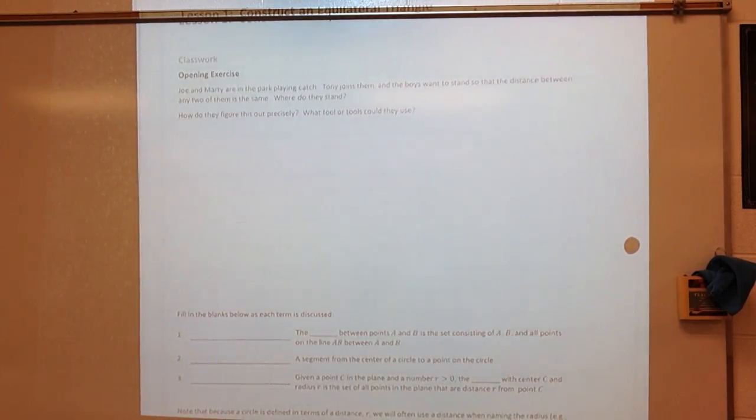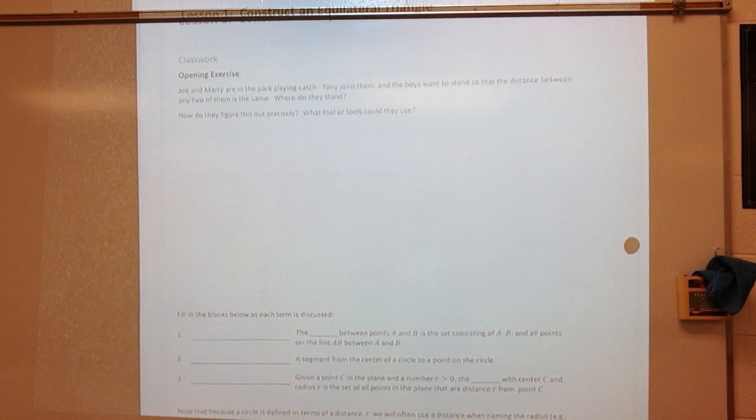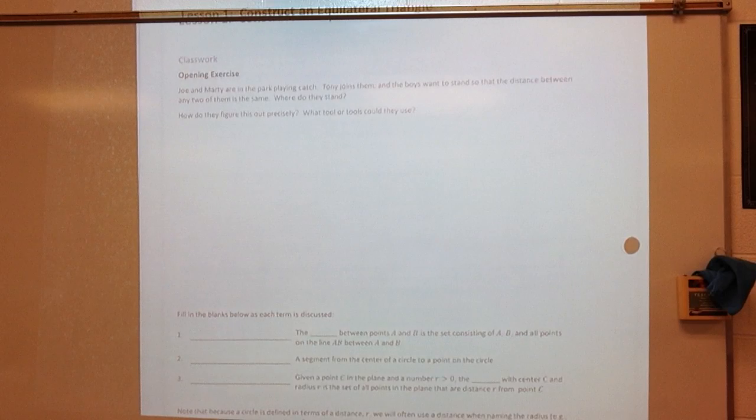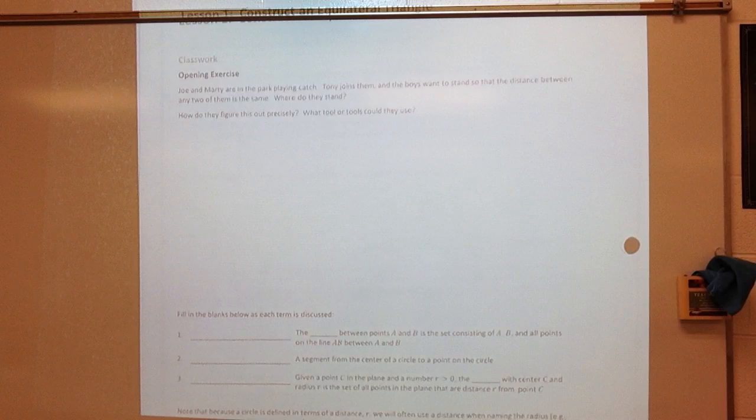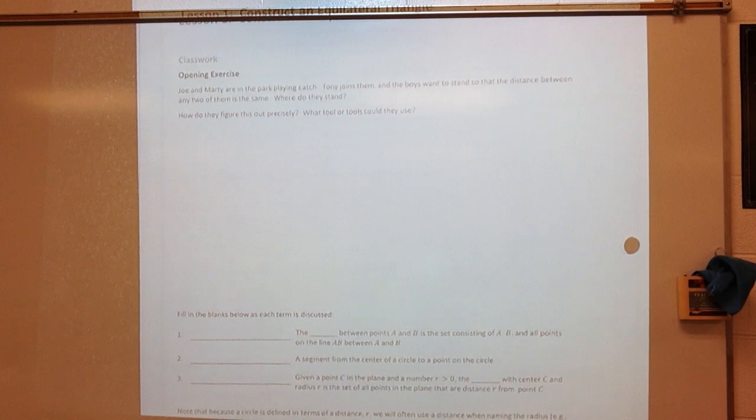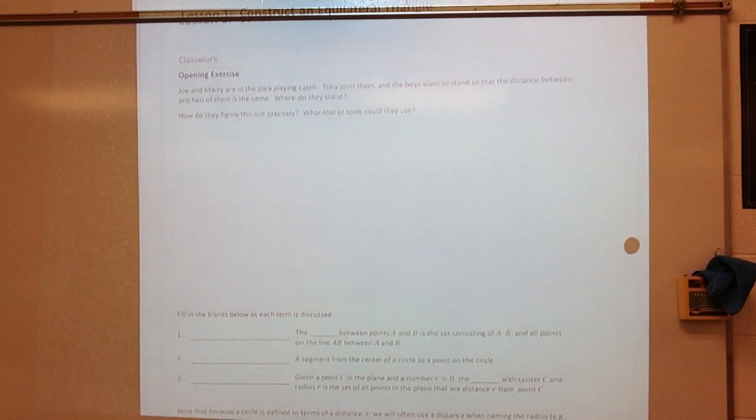So how do they figure this out precisely? What kind of tools could they use? Well, obviously, I'm sure that we're not carrying around a ruler or a yardstick or a tape measure, so they're going to have to get creative. So they can use footsteps to figure out if the space is the same. All right, so they can measure it out using someone's footsteps.